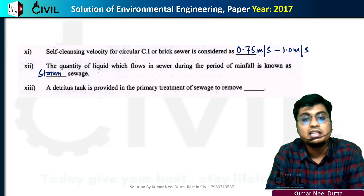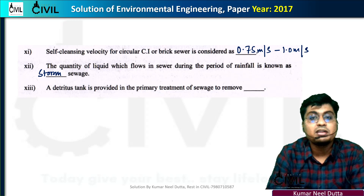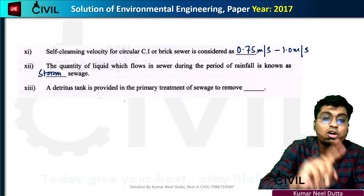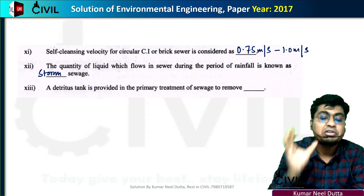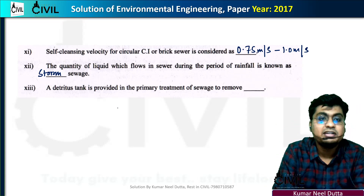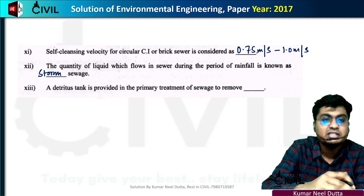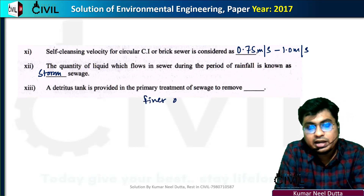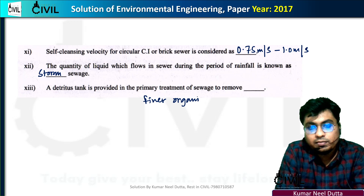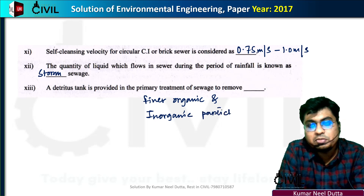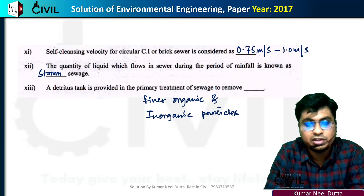A detritus tank is provided in the primary treatment of sewage. It removes organic and inorganic particles. The grit chamber removes heavier particles. So the detritus tank and grit chamber together remove settleable organic and inorganic particles in primary sewage treatment.